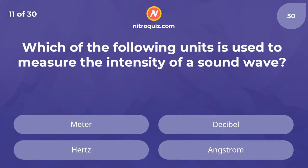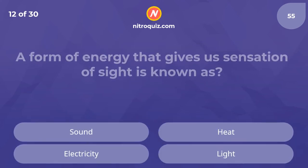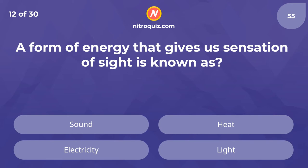Which of the following units is used to measure the intensity of a sound wave? A form of energy that gives us the sensation of sight is known as — the answer is light.